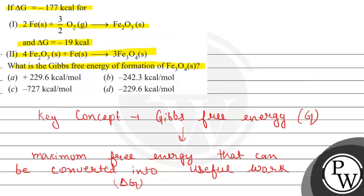According to the given question, looking at the given options, we can see the final answer will be option B — that will be the correct answer of this question: minus 242.3 kilocalorie per mol. Options A, C, and D are incorrect. Hope you understood it well. Best of luck.